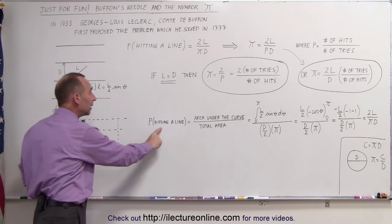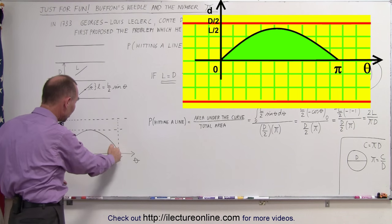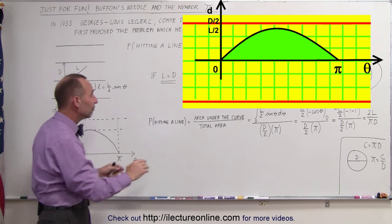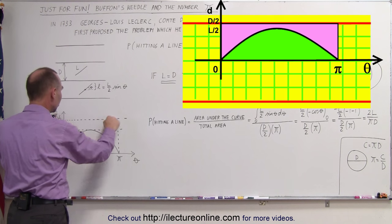We can then say that the probability of hitting a line by a needle is equal to the area underneath the curve, which is the reach of the needle, divided by the total area from the halfway point to the edge, which is this distance right here.